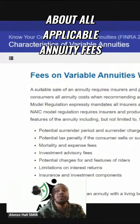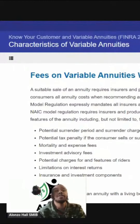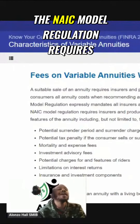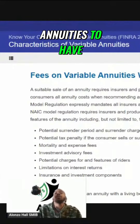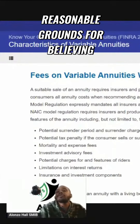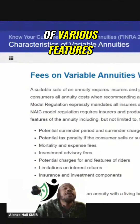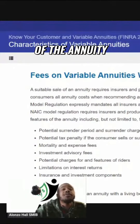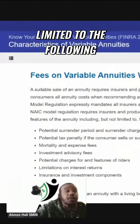This includes fees on living benefit riders. The NAIC model regulation requires insurers and producers that sell annuities to have reasonable grounds for believing that a consumer has been reasonably informed of various features of the annuity, including but not limited to the following.